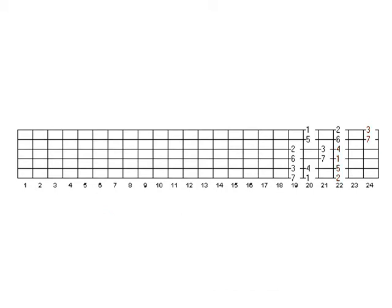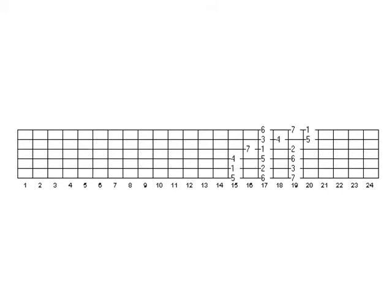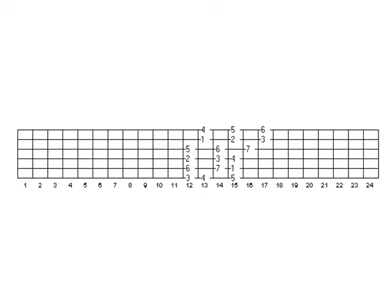If you don't have a guitar with twenty-four frets, don't sweat it, because these patterns further up in the neck can be found twelve frets lower on the fretboard as well. For instance, in the key of C, pattern seven can also be found at the seventh fret. Pattern six, originally at the seventeenth fret, can be found at the fifth fret. Pattern five at the fifteenth fret can be found at the third fret. Pattern four at the thirteenth fret — first fret. And pattern three at the twelfth fret can also be found in the open position.